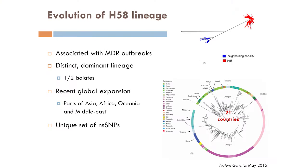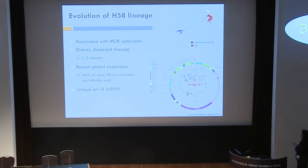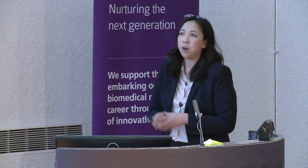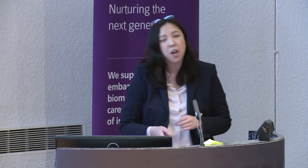We specifically focused on H58 because it causes MDR disease and is associated with MDR outbreaks in parts of Asia and Africa. It forms a very distinct dominant lineage making up more than half the isolates in our global tree and has recently shown global expansion covering 21 different countries in parts of Asia, Africa, Oceania, and the Middle East. Very interestingly, this lineage has a unique set of non-synonymous SNPs — about 44 — and over a third are found in genes associated with pathogenicity or virulence, which may underlie its success.